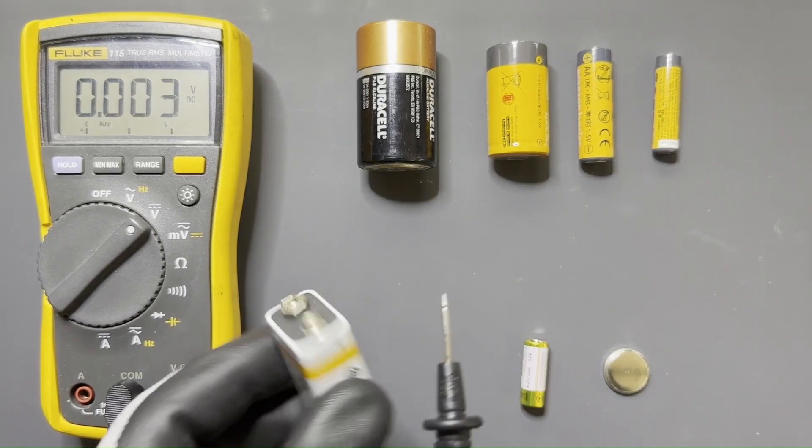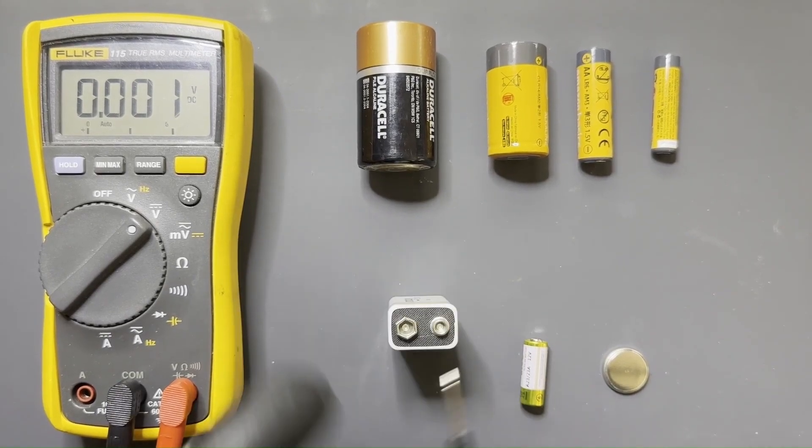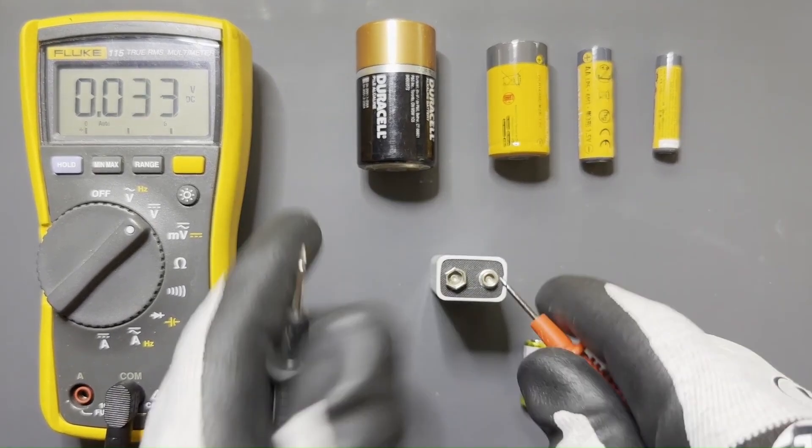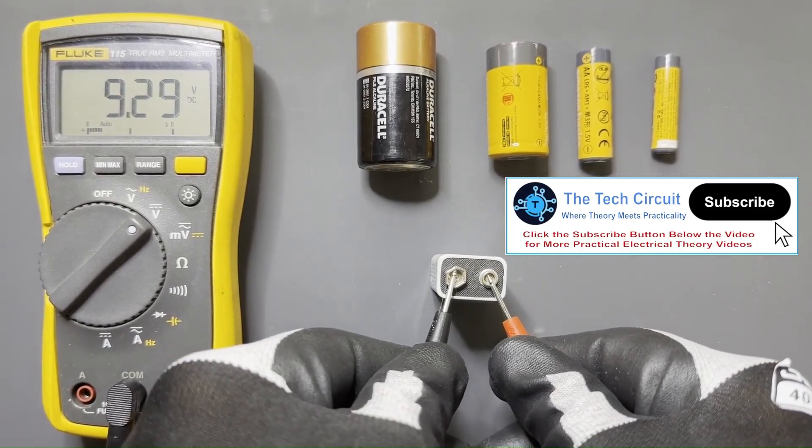This 9-volt battery here, the pointed, the small side, is going to be the positive, which is the red lead. Sort of follows a convention. For this one we got 9.29. That's a good 3% over, which is a good fresh battery right there.